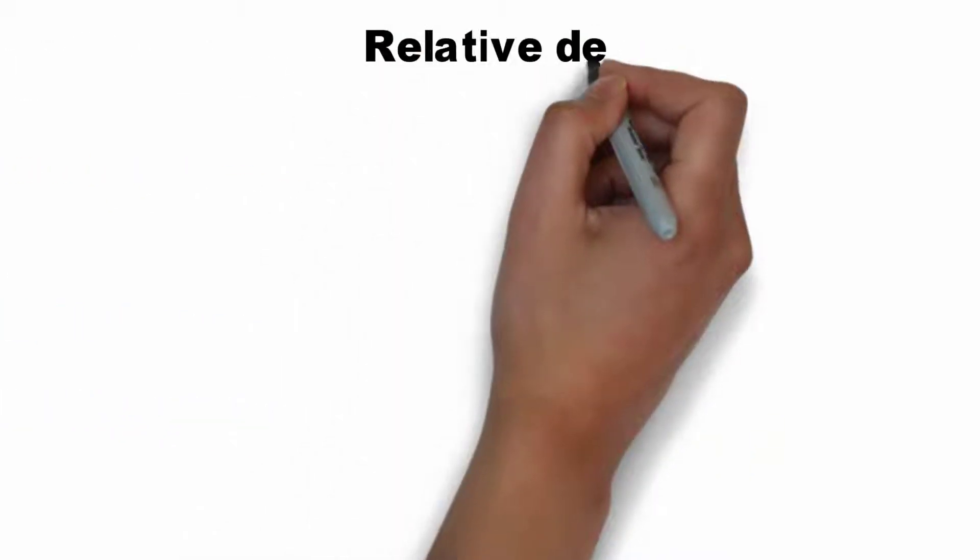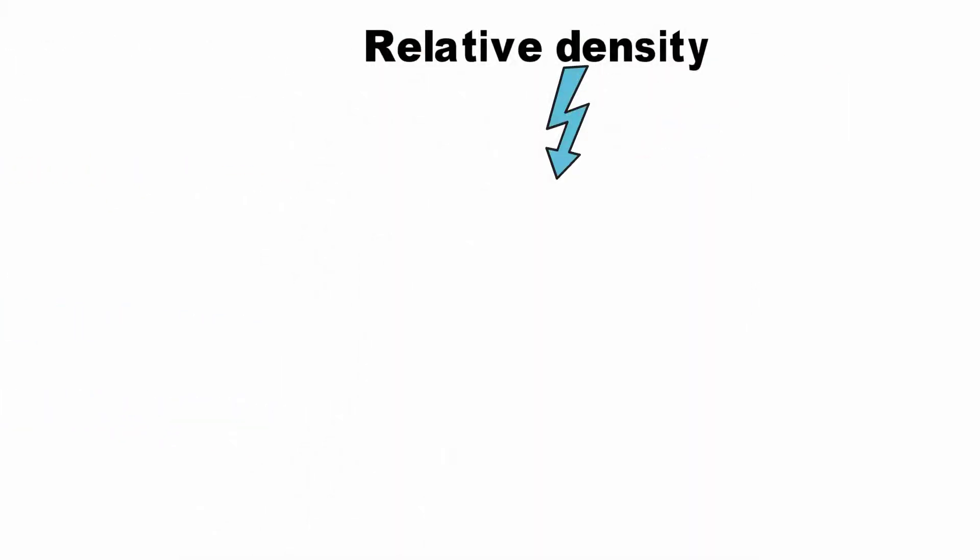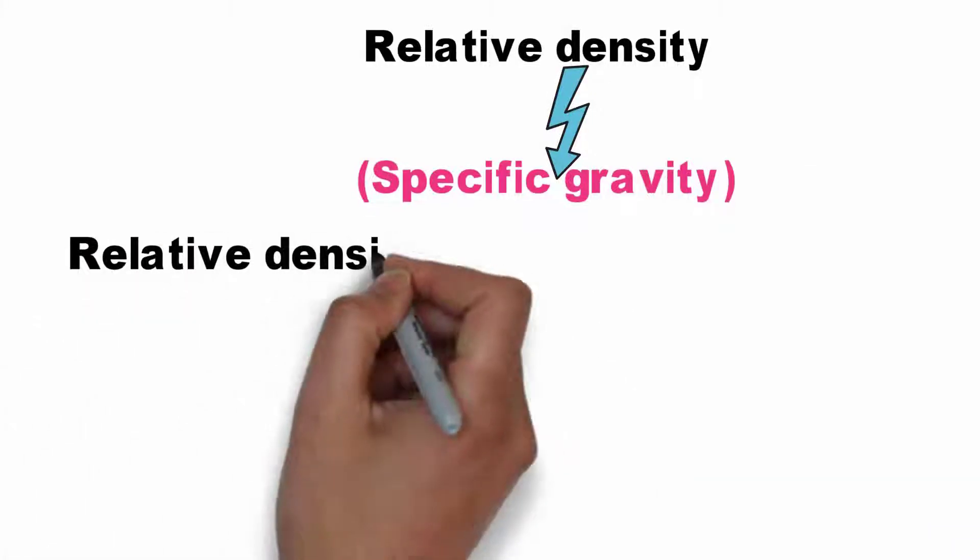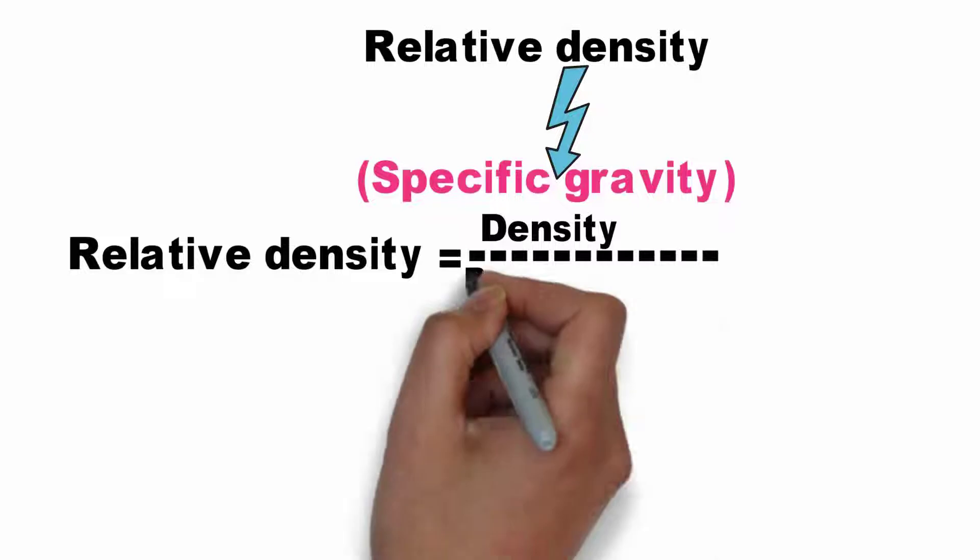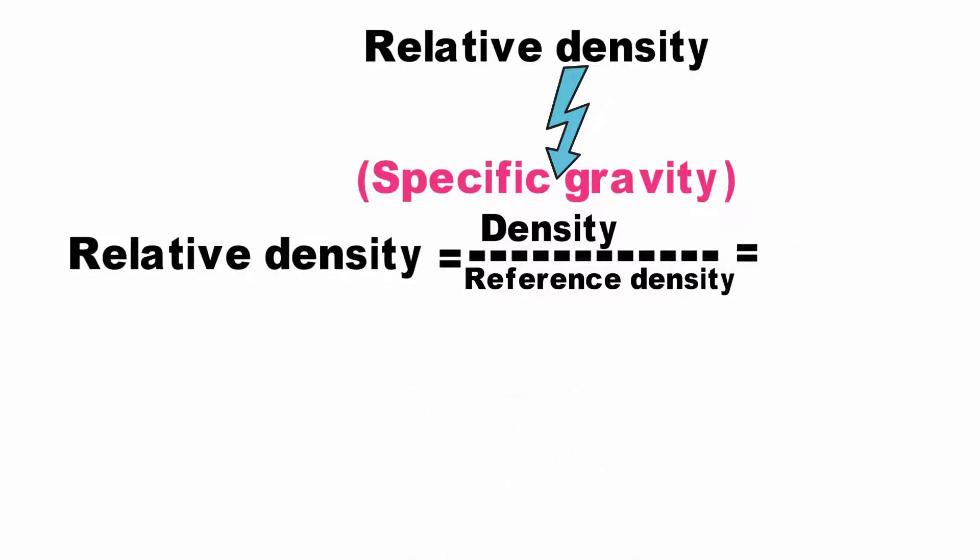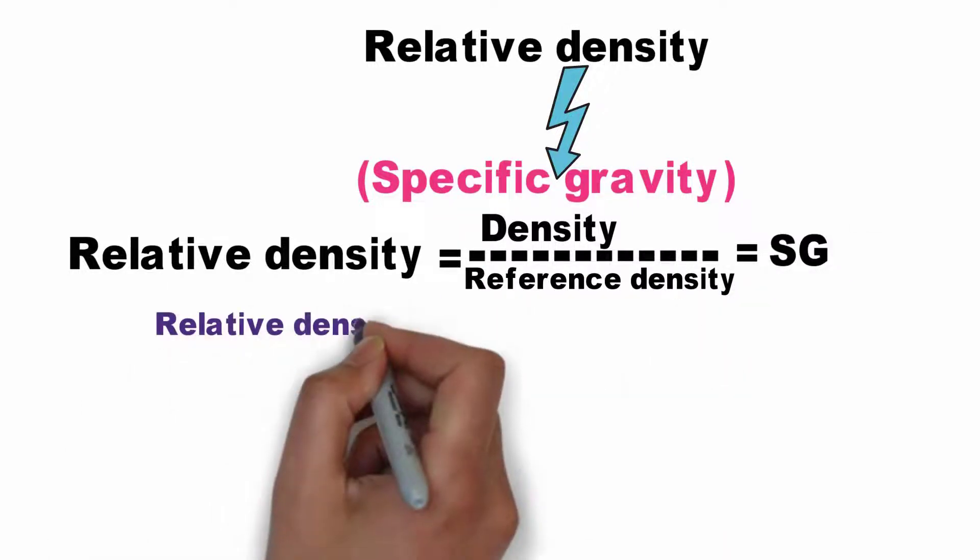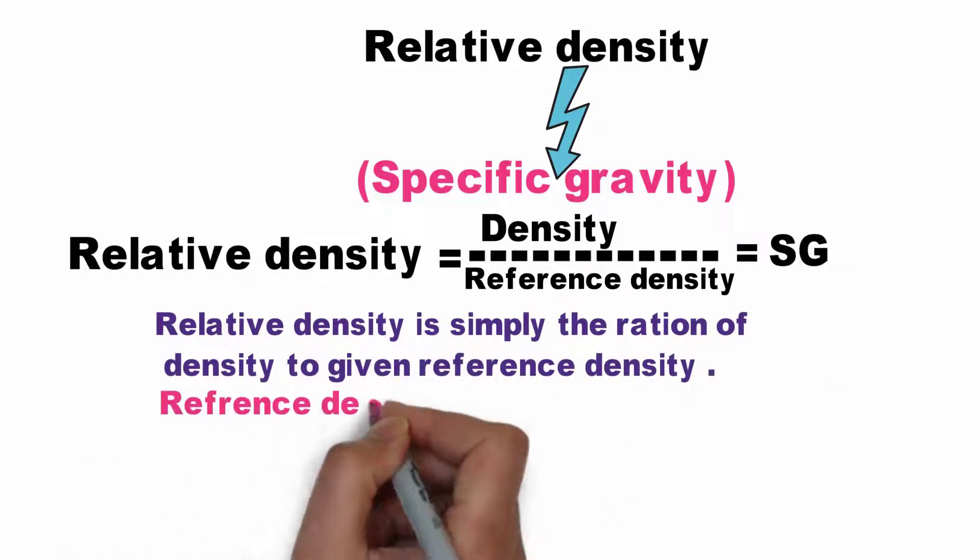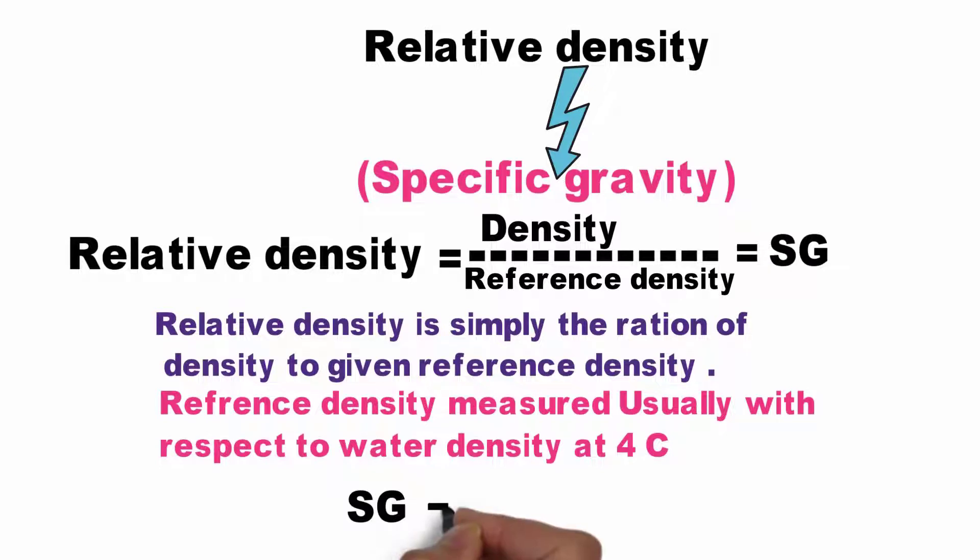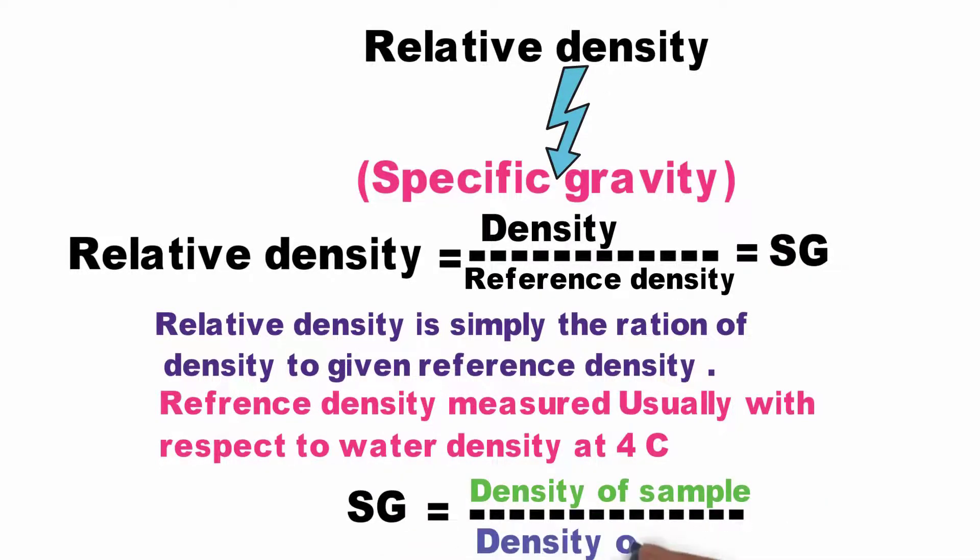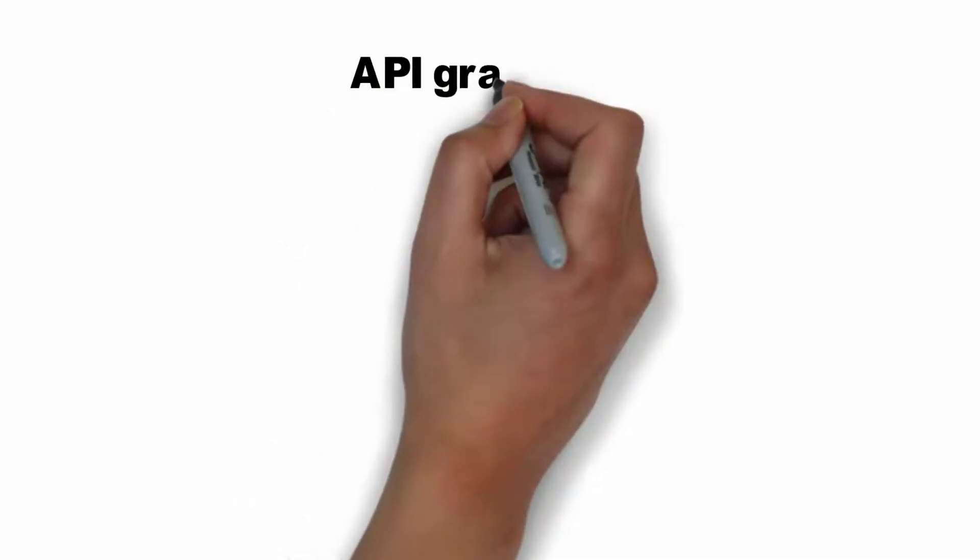Now, relative density has another name which is specific gravity, and it is simply the ratio of density to a given reference density. The reference density is usually measured with respect to water density at four degrees. So specific gravity equals density of sample divided by the density of water.